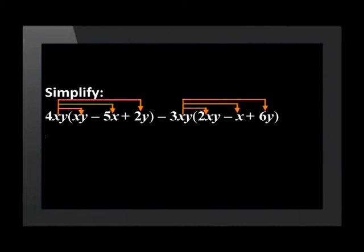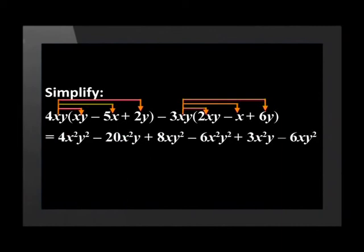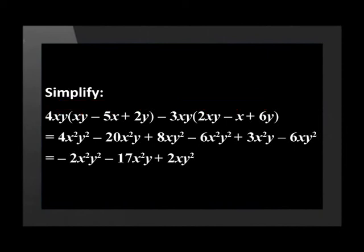This gives us 4x squared, y squared, minus 20x squared y, plus 8xy squared, minus 6x squared, y squared, plus 3x squared, y minus 18xy squared. And lastly,